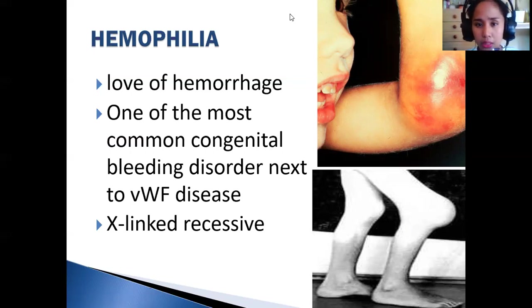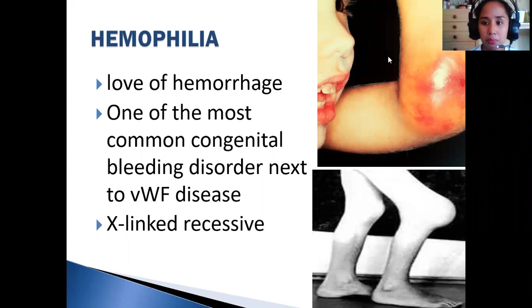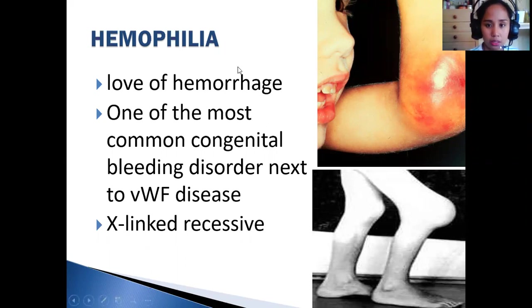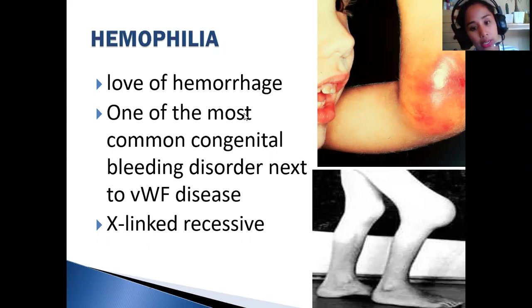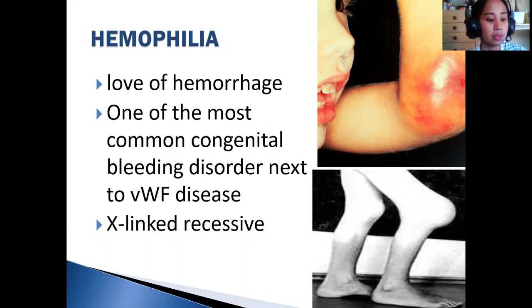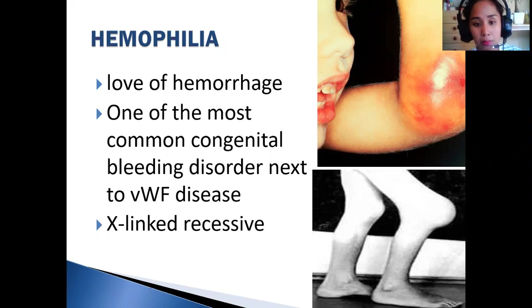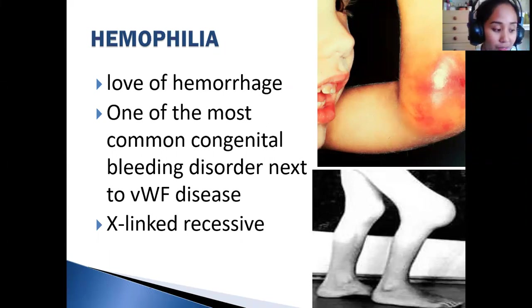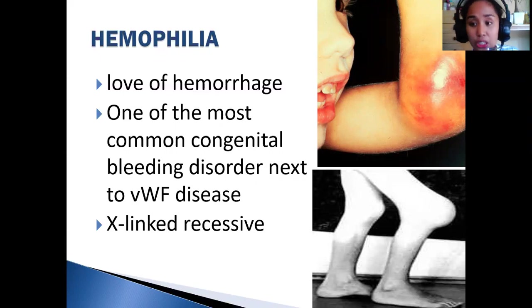So in hemophilia, the way it is inherited is X-linked recessive. Why is it X-linked? Because your factor 8, factor 9, and factor 10, which are involved in hemophilia, are found on the X chromosome — that's why it's X-linked recessive.